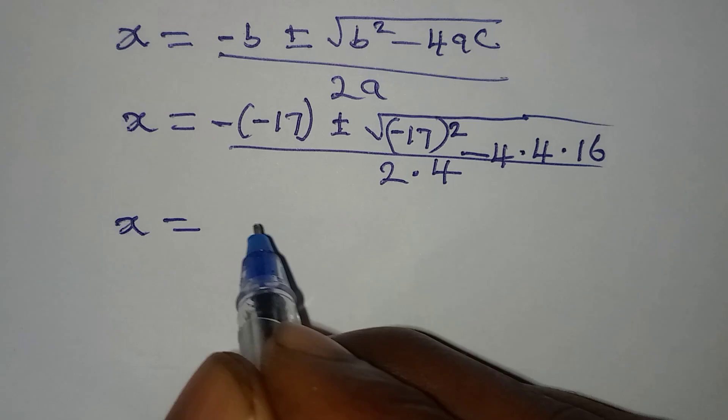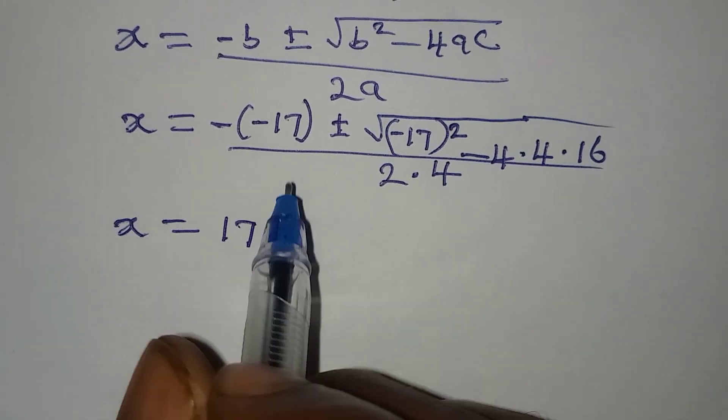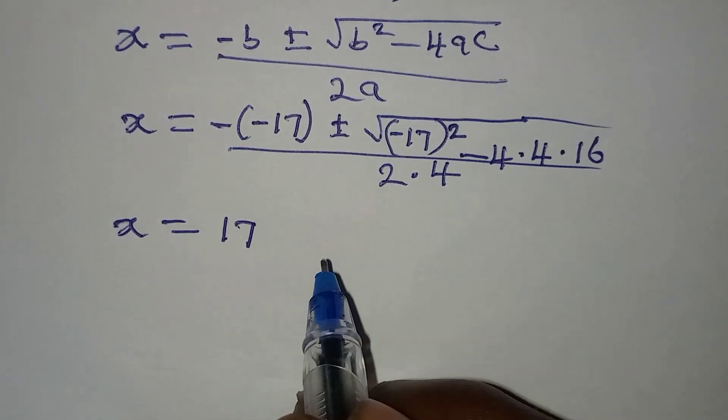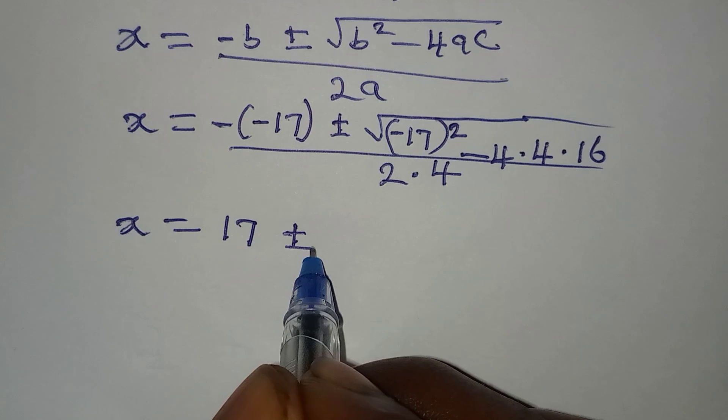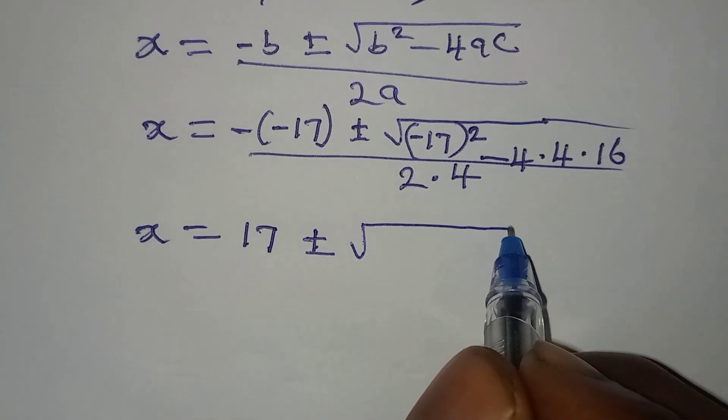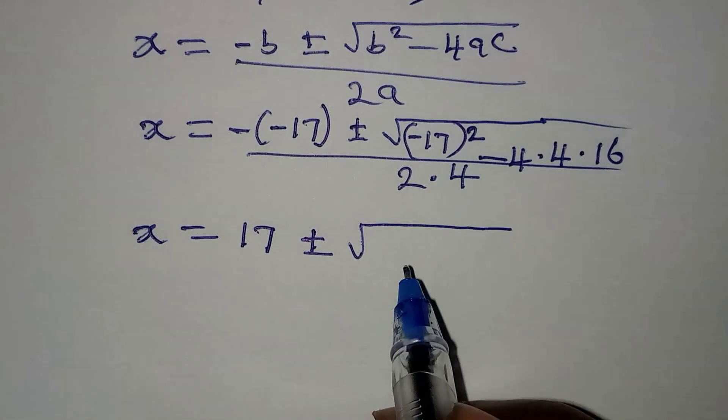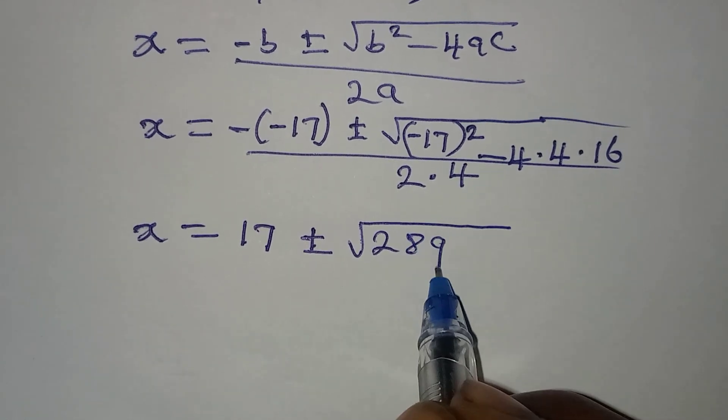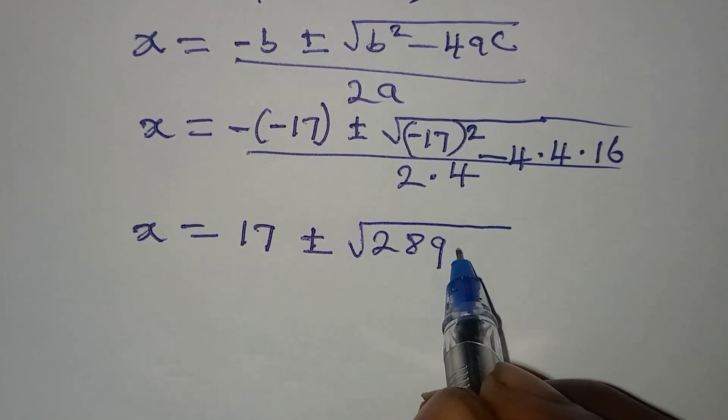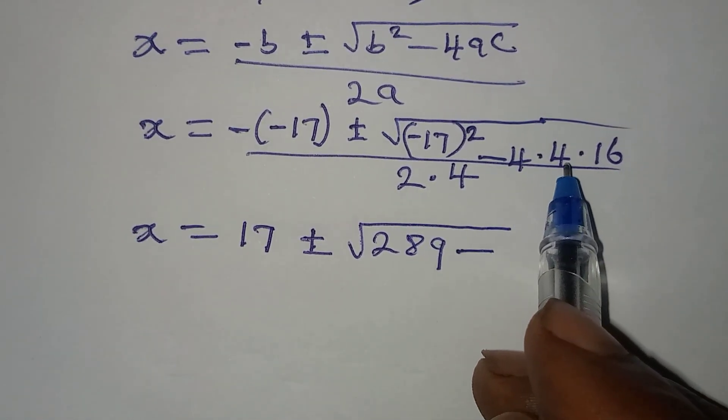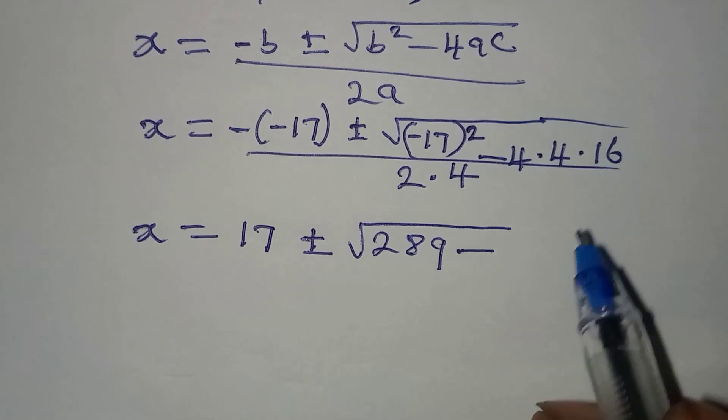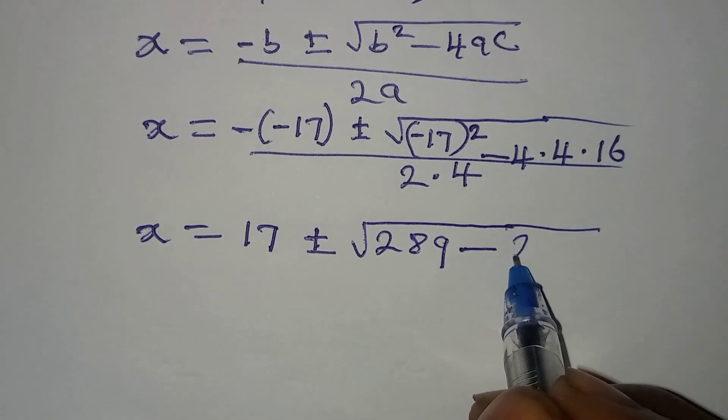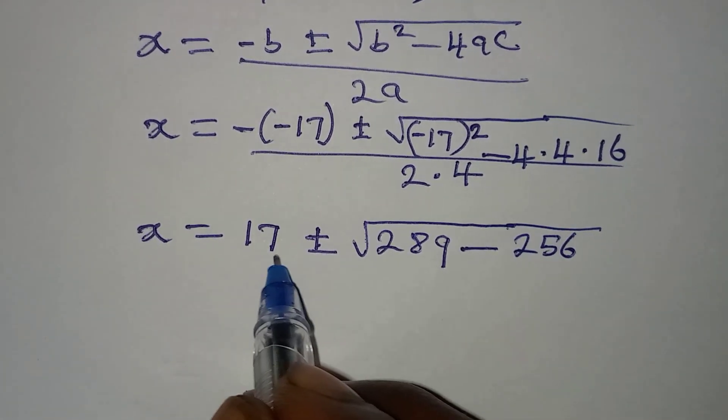x will now be equal to 17 ± √(289 - 256) over 8. -17 squared gives us 289, then 4 times 4 is 16, times 16 is 256. This would be over 8.